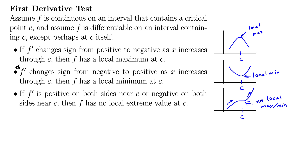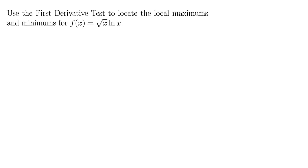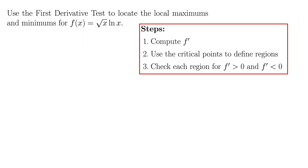So that's the first derivative test. Just remembering the picture version or the intuitive version of it is fine. Let's try it in an example. In this example, we have: use the first derivative test to locate the local maximums and minimums for f(x) = √x · ln(x). The first thing we have to do is find where the function is increasing and decreasing.